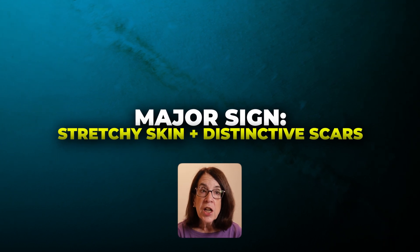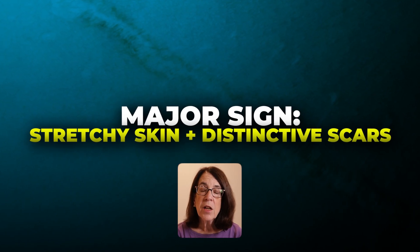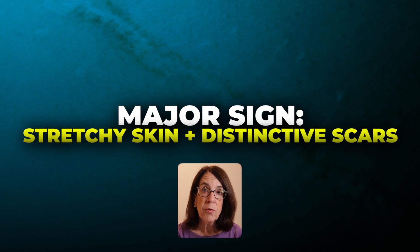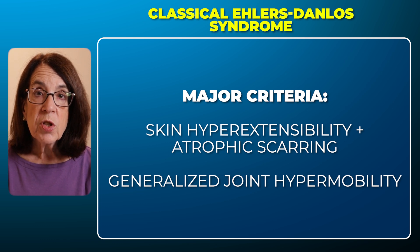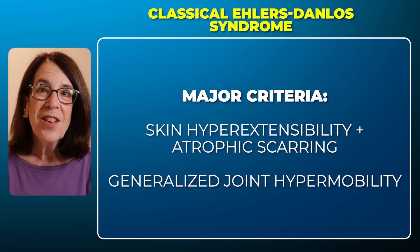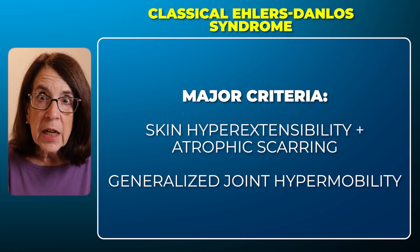There are two major criteria for the classical type of Ehlers-Danlos Syndrome. The first is the presence of skin hyperextensibility and the typical atrophic scars that we see with the fragility of the skin. The second major diagnostic feature is generalized joint hypermobility. We can make a clinical diagnosis if a person has both skin hyperextensibility with atrophic scarring and generalized joint hypermobility.